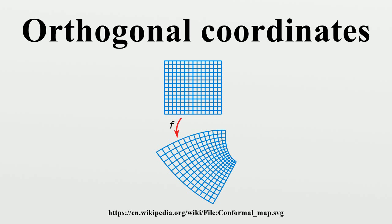Dot products: The dot product in Cartesian coordinates is simply the sum of the products of components. In orthogonal coordinates, the dot product of two vectors x and y takes this familiar form when the components of the vectors are calculated in the normalized basis. This is an immediate consequence of the fact that the normalized basis at some point can form a Cartesian coordinate system — the basis set is orthonormal. For components in the covariant or contravariant bases, this can be readily derived by writing out the vectors in component form, normalizing the basis vectors, and taking the dot product, using the fact that the normalized covariant and contravariant bases are equal.